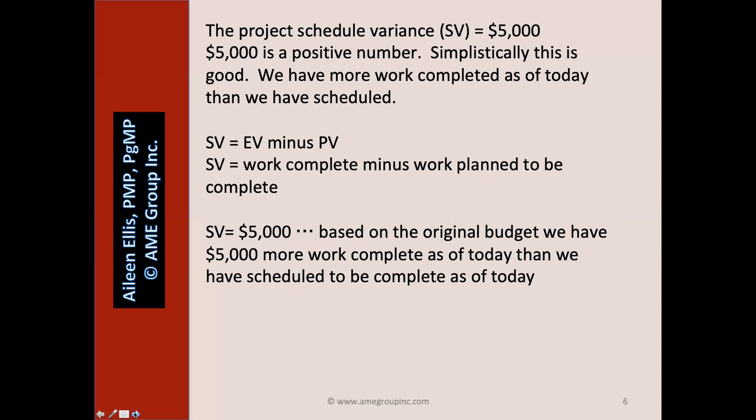The project schedule variance equals $5,000 — a positive number. Simplistically, this is good; we have more work completed as of today than we have scheduled. Schedule variance equals EV minus PV, meaning work complete minus work planned to be complete as of today. If the schedule variance is a positive $5,000, based on the original budget, we have $5,000 more work complete as of today than what we have scheduled to be complete as of today.